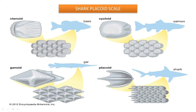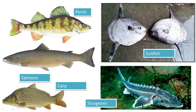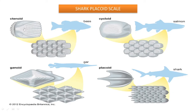The speciality of the ctenoid scale is that it is somewhat round, rimmed with tooth-like structures on the outer edge, and it is seen in an overlapping pattern. This type of scale is common in perches and sunfishes.